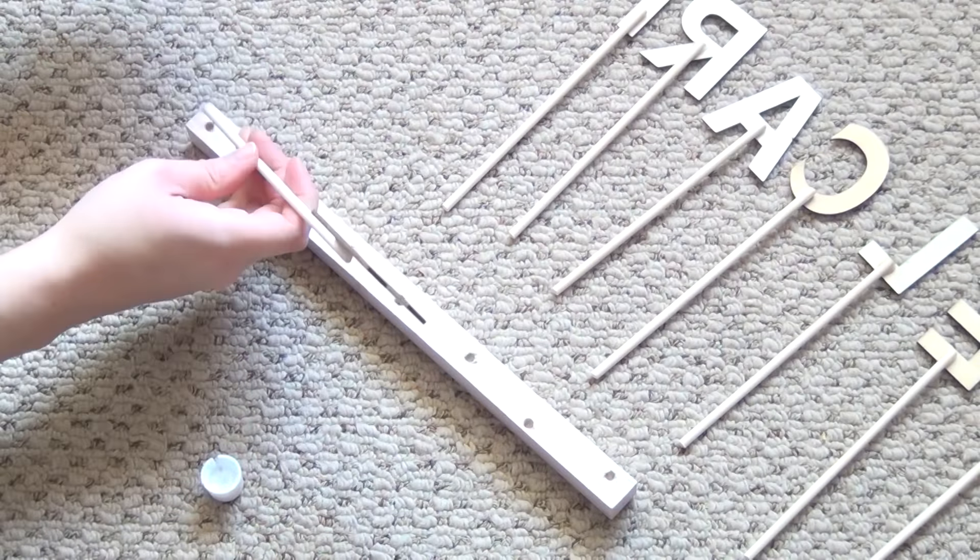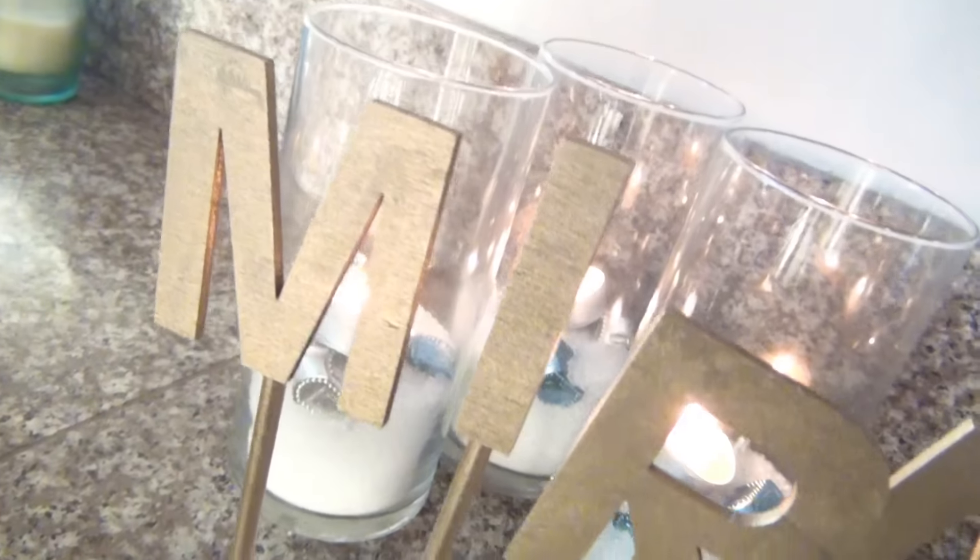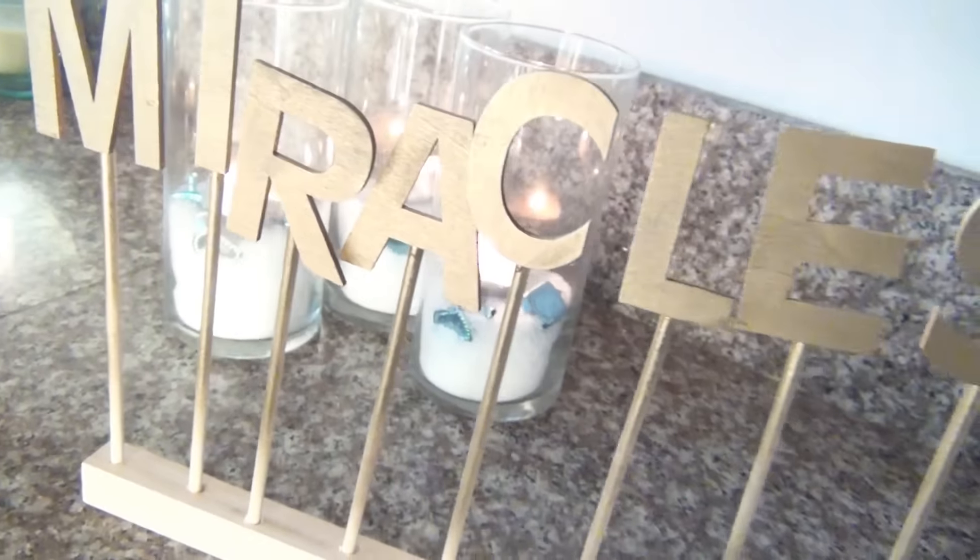When the letters have dried onto the dowels glue them into the holes and if you like you can leave it plain or spray it with a light dusting of gold spray paint like I did.